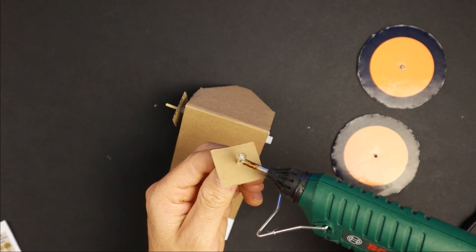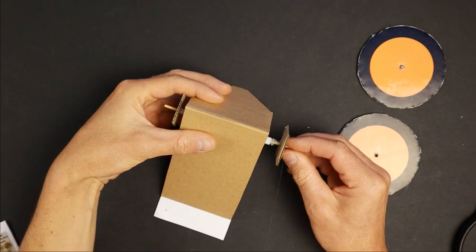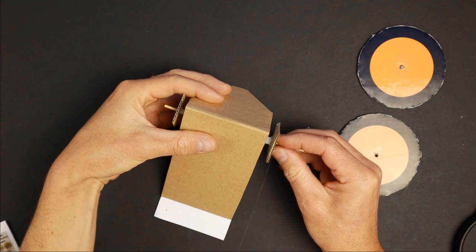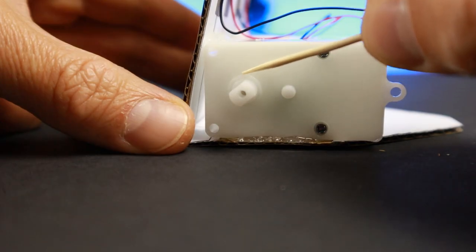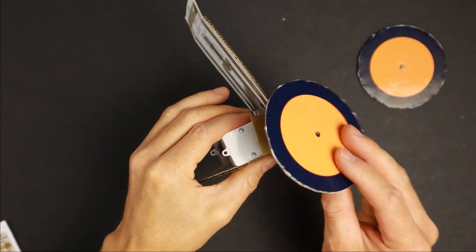Alternatively, you can glue a toothpick into the hole and glue a small piece of cardboard on top. Make sure not to spill glue into the motors bearing. Now you can attach the wheel with big drops of glue.